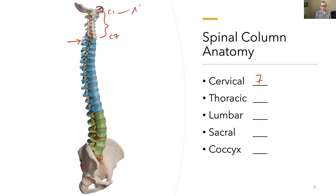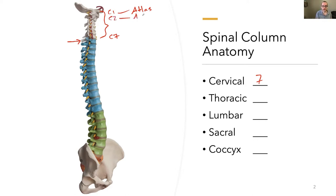C1 is also called the atlas — from mythology, atlas held the earth on his shoulders, and C1 holds our head. C2 is the axis. Those are the special vertebrae that allow for a lot more mobility, movement, and rotation compared to all the rest. It's the shape and design of that C1-C2 joint that allows us to move our head around. The rest of the spine has a good amount of give, bend, and twist, but not nearly as much as that top segment.